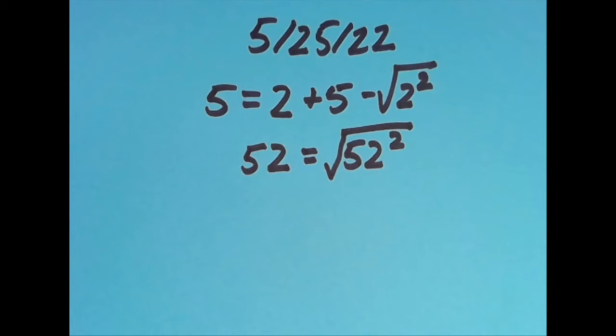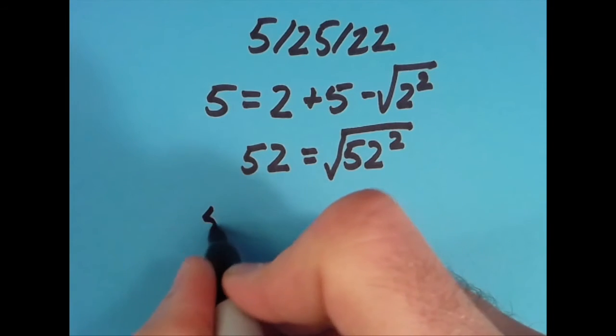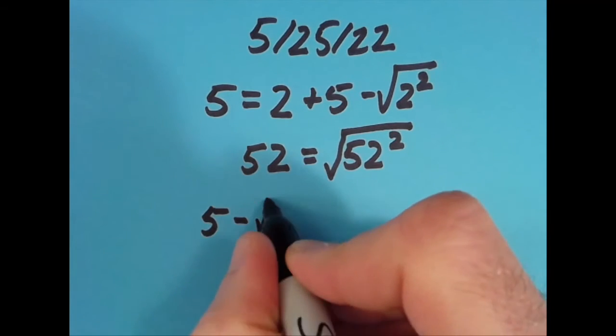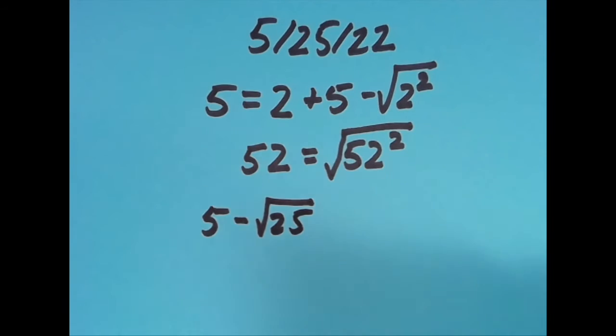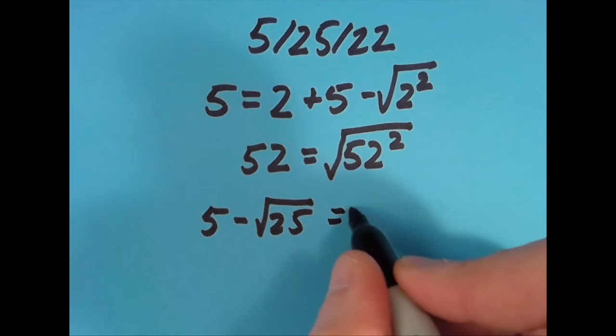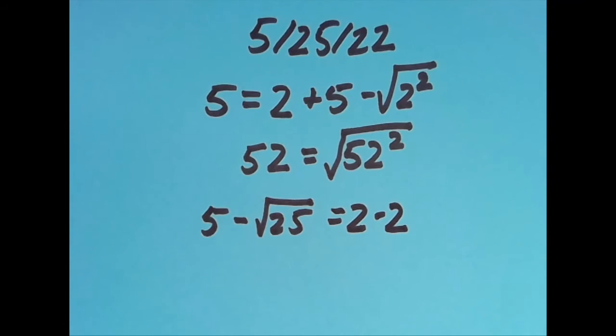I kept trying though. I put the equal sign one more spot to the right, and I came up with 5 minus the square root of 25, so that's going to give us 5 minus 5, which is 0, equals 2 minus 2, which is also 0.